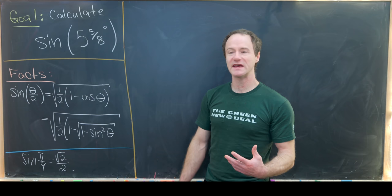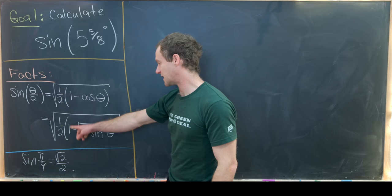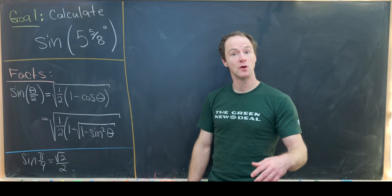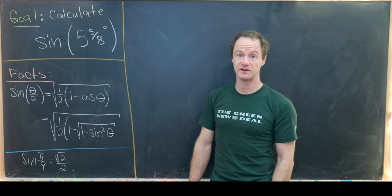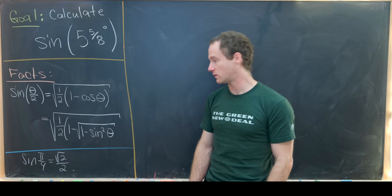Furthermore, when taking the square root, we take the positive square root, which means the minus sine stays a minus, because all of these angles — pi over 4, pi over 8, pi over 16, and finally pi over 32 — occur in the first quadrant. With all that said, let's get to our calculation one bit at a time.